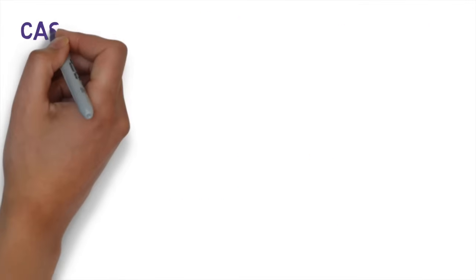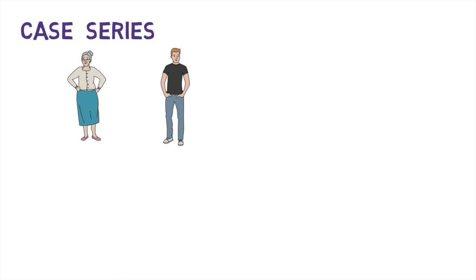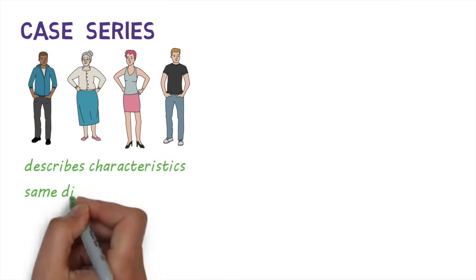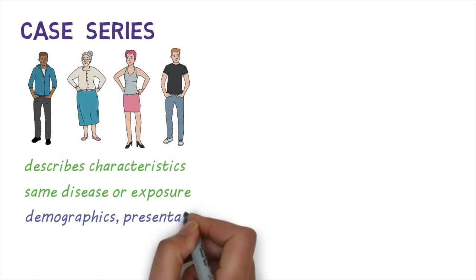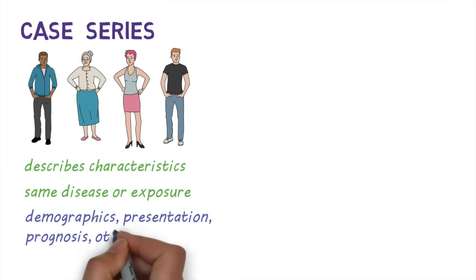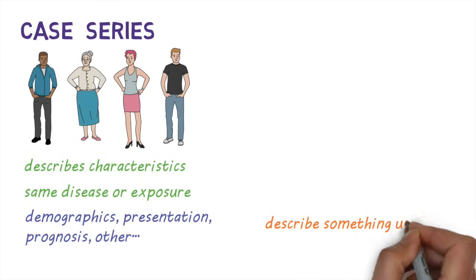A case series describes the characteristics of a group of people who have the same disease or the same exposure. The aim of this is to understand the demographics, clinical presentation, prognosis, or other characteristics of people who have a particular disease, or describe something unusual.